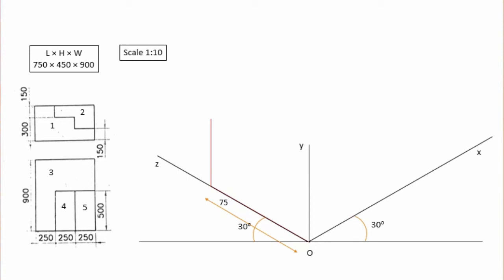All lines are parallel. The z-axis, y-axis, and x-axis are all parallel. You can say that the non-isometric lines are also parallel. The y-axis lines are parallel.